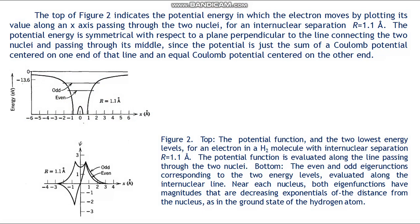Because the motion of the electron in a bound state of this potential has the same symmetry, the electron's bound-state probability density ψ*ψ will have equal values at two points equidistant from the plane. This requires each of the eigenfunctions to have either precisely the same value at the two points, or else a value precisely equal to the negative of its value at the other point. That is, the eigenfunctions must be either even or odd with respect to reflection in that plane.